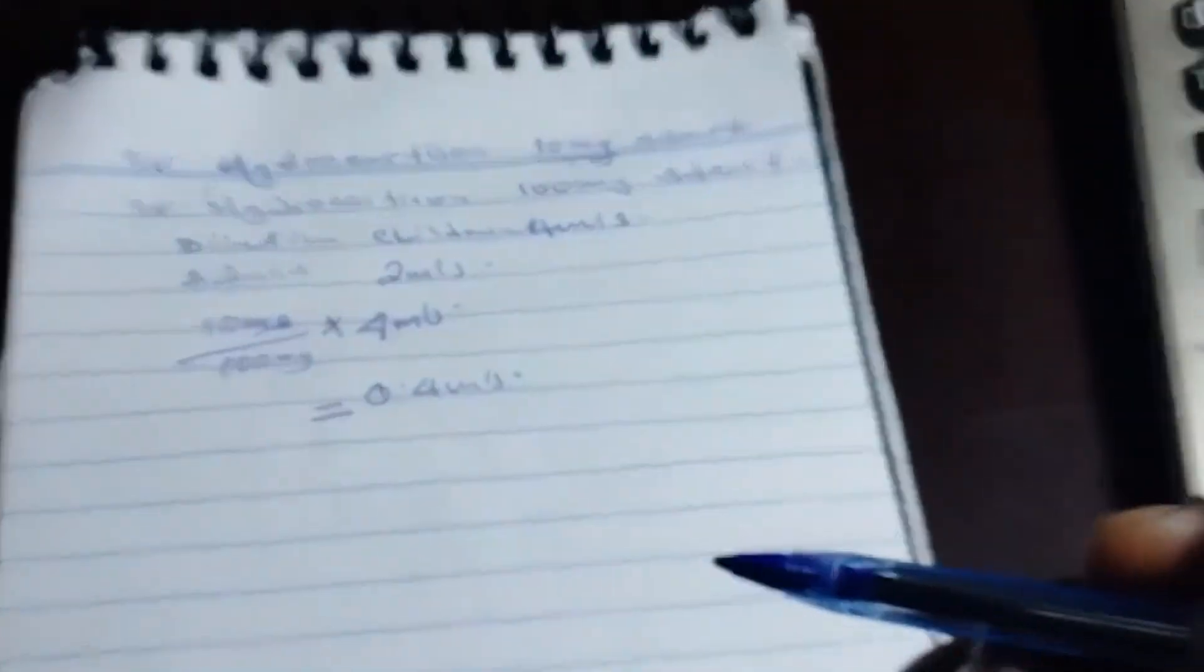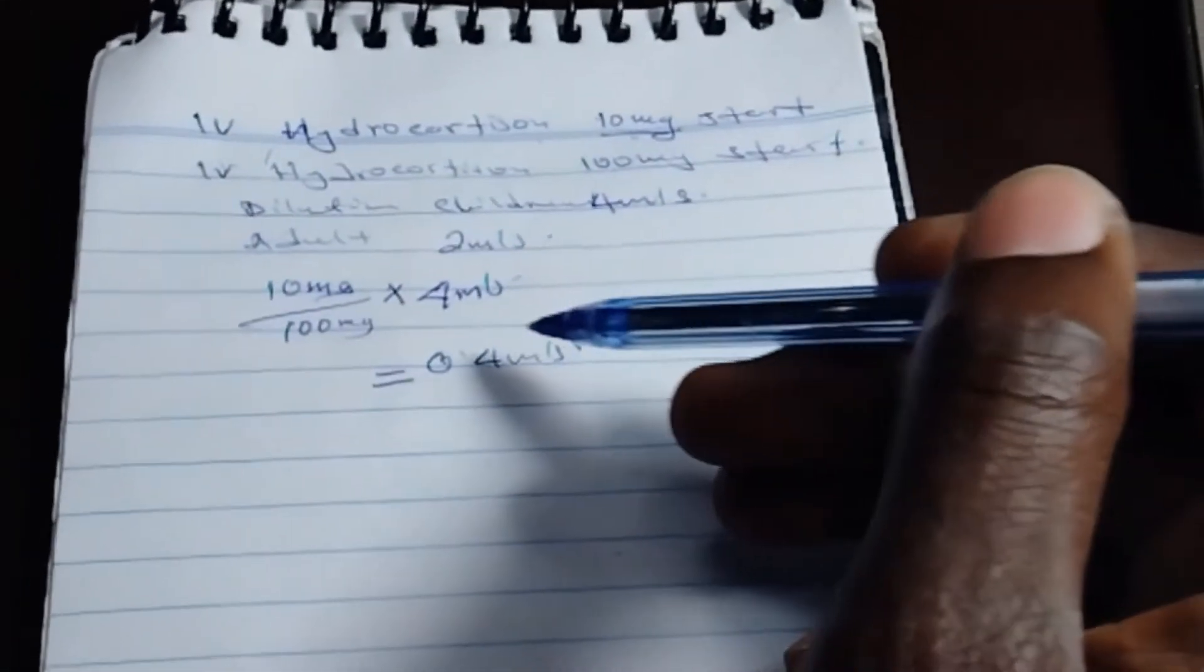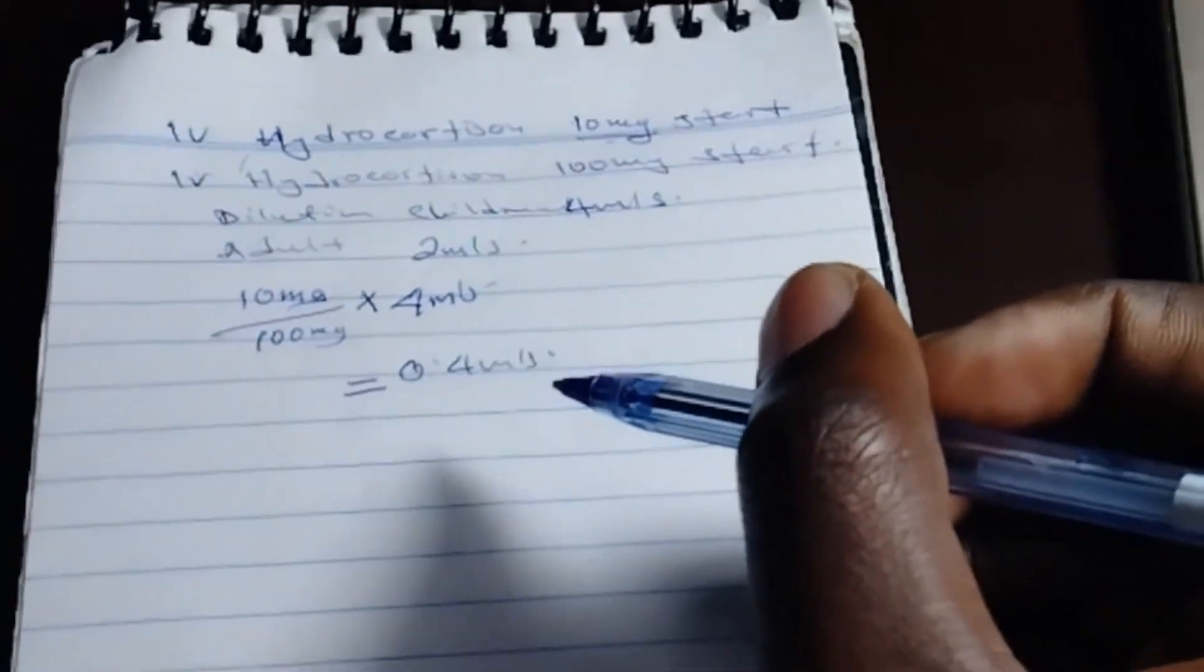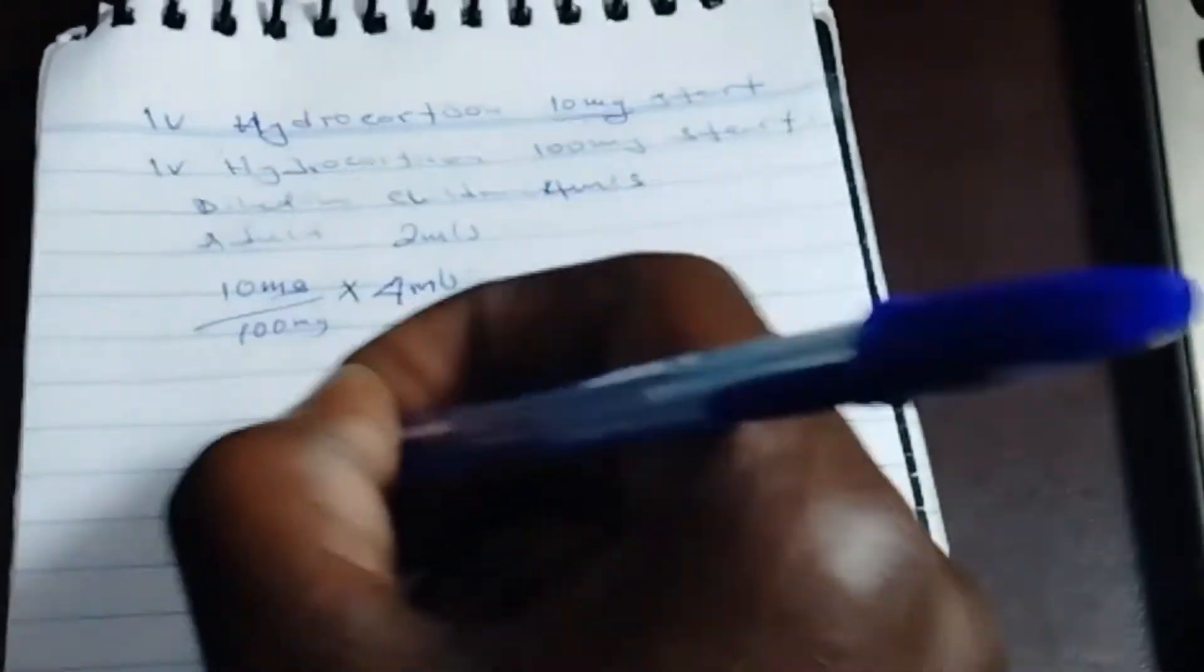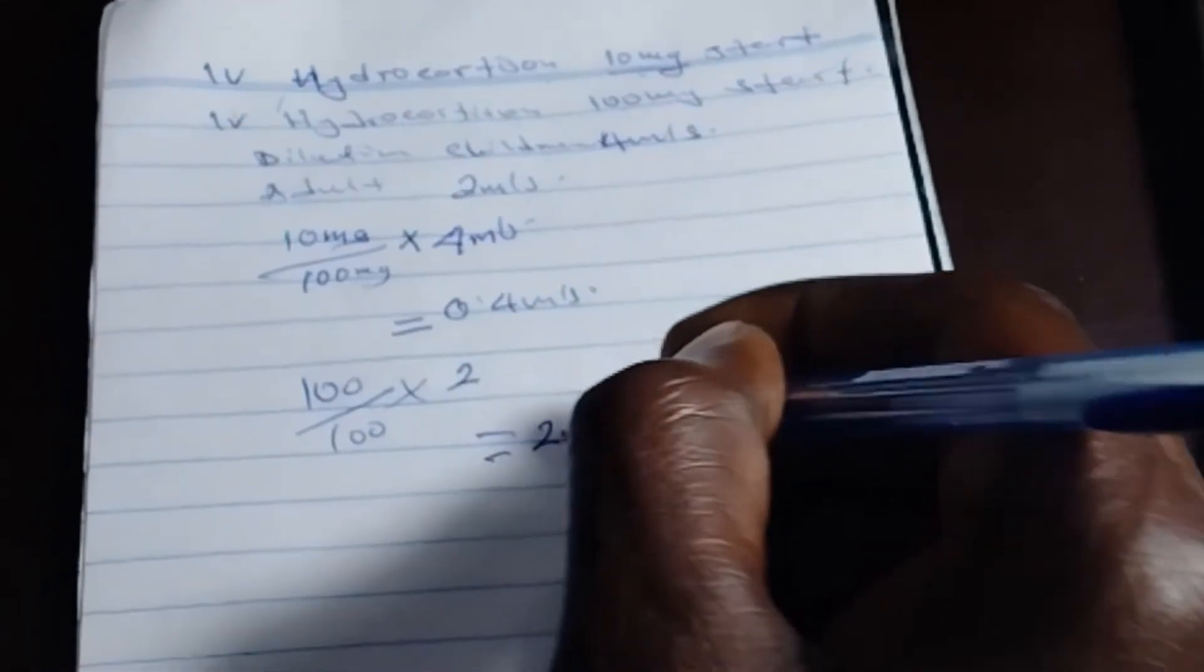So for the adult, because this one is now 100 milligrams, we just dilute with two mills, then we just aspirate and give. So it is 100 divided by 100 times two, which gives you two mills.